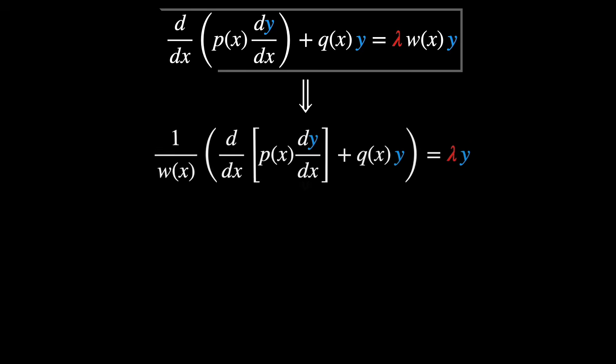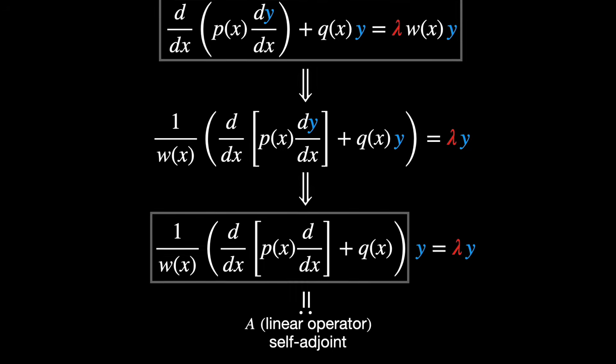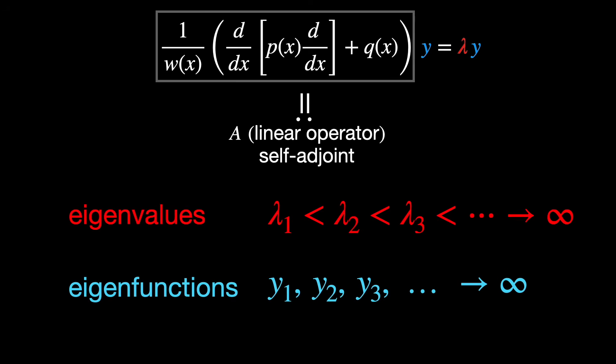We can rewrite the equation this way, and then we clearly see that this is the operator. The operator A, as we define here, is not only linear, but also a self-adjoint operator. A self-adjoint operator is a linear operator with real eigenvalues lambda. Each of these eigenvalues, lambda 1, lambda 2, and so on, has their own eigenfunctions, y1, y2, and so on, associated with each of them.